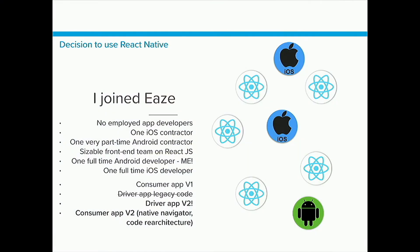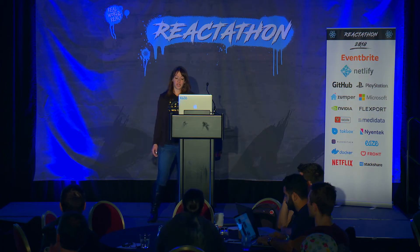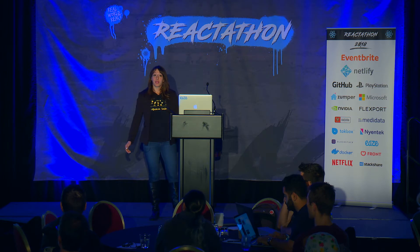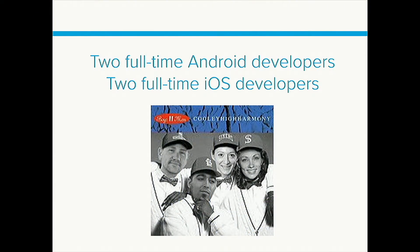With React.js frontend, one iOS contractor, and one Android developer, it made a lot of sense to write code once in React Native. We ended up with driver app version two, which is still what drivers use today. Once we established we could get Ease into the app stores with a bare-bones signup experience, we re-architected it — put out a version two using completely native navigation with the library that Wix puts out, and a full code re-architecture that was much more scalable.